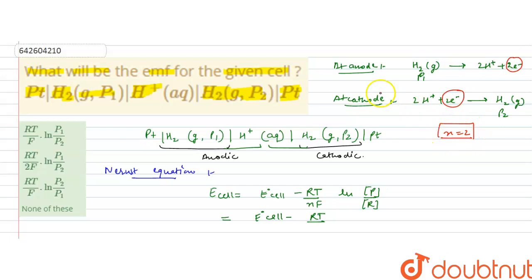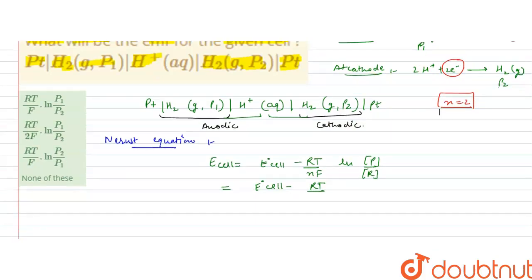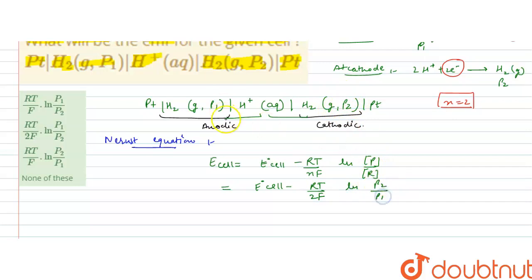Since n = 2, the Nernst equation becomes: E_cell = E°_cell − (RT/2F) × ln(p2/p1), where p2 is the partial pressure of the product and p1 is the partial pressure of the reactant.